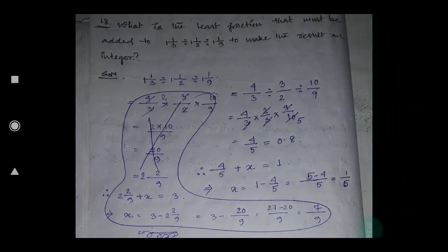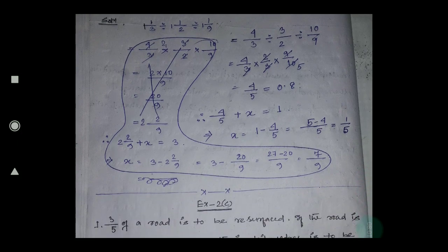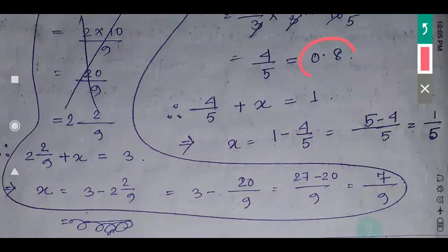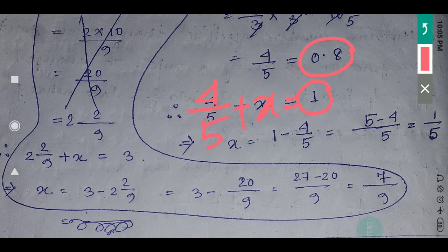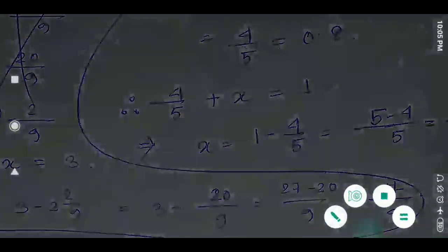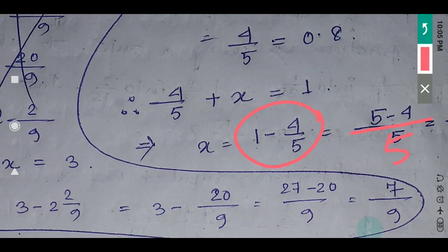So the nearest integer is 1. We don't know what number to add, so I take it as x. I write: 4/5 plus x equals 1. So x equals 1 minus 4/5. Taking LCM: 5/5 minus 4/5 equals 1/5. So the least fraction that must be added is 1/5. With this, Exercise 2b is completed.